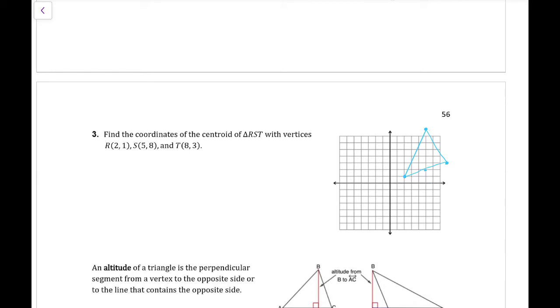The first midpoint I'm finding is the midpoint between 2, 1 and 8, 3. If I add 8 plus 2 is 10 and I divide that by 2, I get 5. 3 plus 1 is 4. Divide that by 2, I get 2.